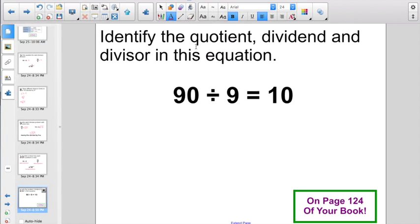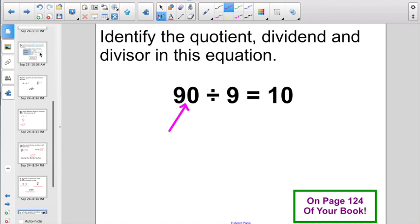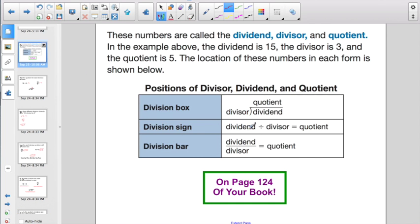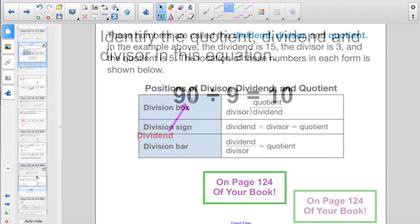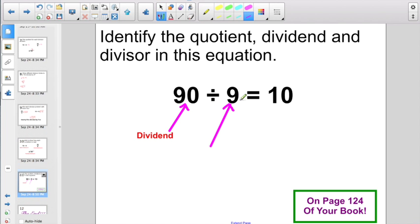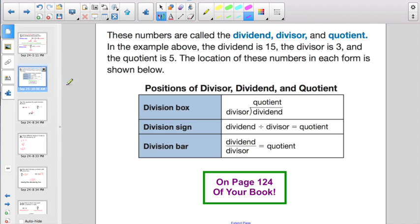Here, they're asking us to identify the quotient, dividend, and divisor in this equation. This is all listed out on page 124 of your book, if you are not sure. Let's start off with this first one, 90. What is 90? Is that the quotient, the dividend, or the divisor? If you need to go back and look at page 124, it would say that the dividend is first. So, 90 is your dividend. So, let's take a look at the second number, the number we're dividing by. The number we're dividing by is always the divisor.